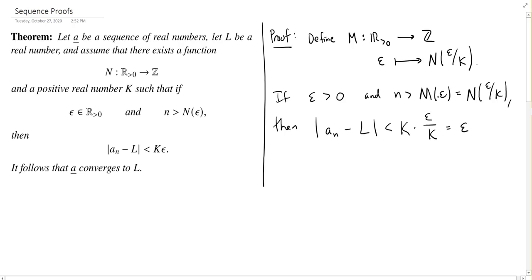And so I've just shown that if I go past the eventually number, using N for epsilon over K, or if you like, the eventually number for epsilon using M, then the difference between my sequence A and my limit L will be less than epsilon.